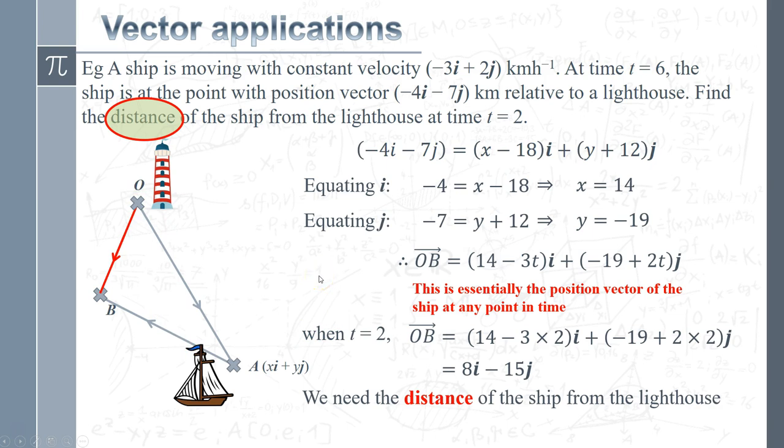And clearly the way to do that is to find the magnitude of the vector. And that's essentially the difference between distance, which is how far away it is, compared to displacement, which is essentially the vector. So what we're going to do is find the magnitude, which means doing a bit of Pythagoras. So we've got 8 squared plus 15 squared. And so that means the ship is 17 kilometers away from the lighthouse.